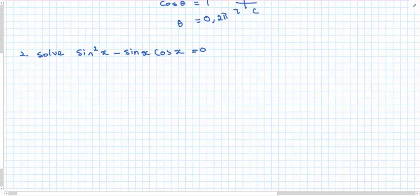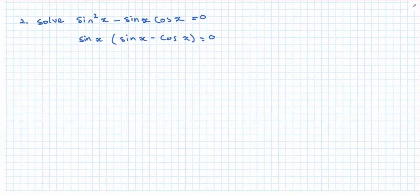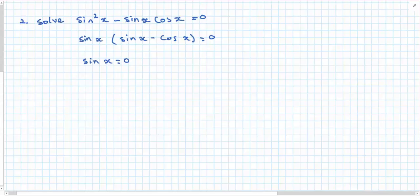Alright, again I'm going to apply some of my algebraic knowledge by factorizing. That leaves me with sin x times the quantity sin x minus cos x. And now I'm solving this equation: either we will have sin x equaling 0, or sin x minus cos x equaling 0.